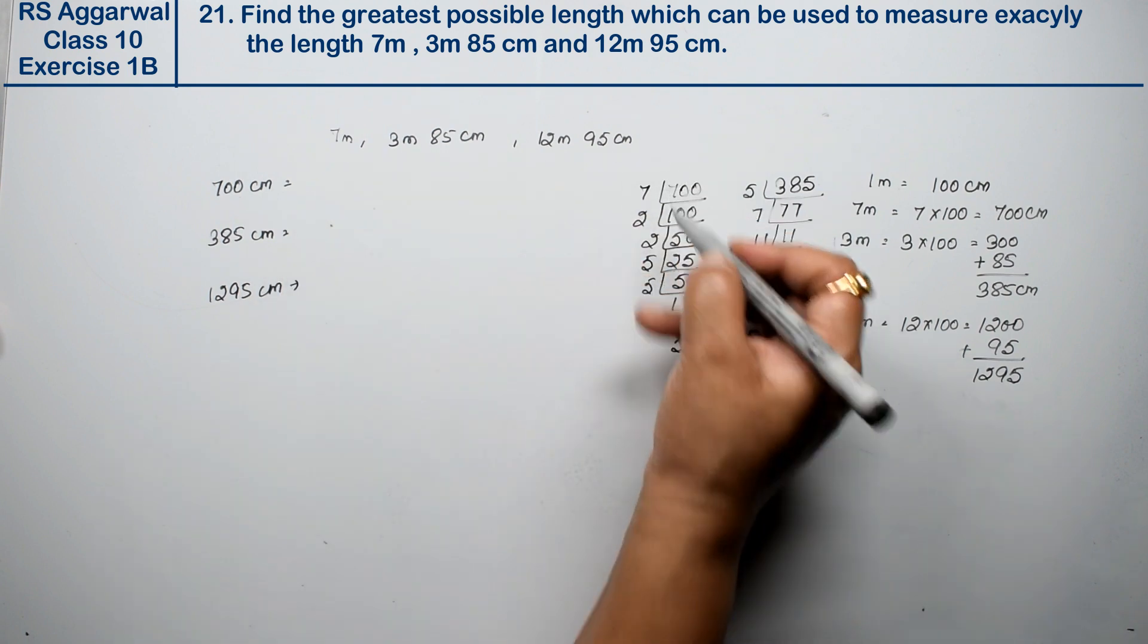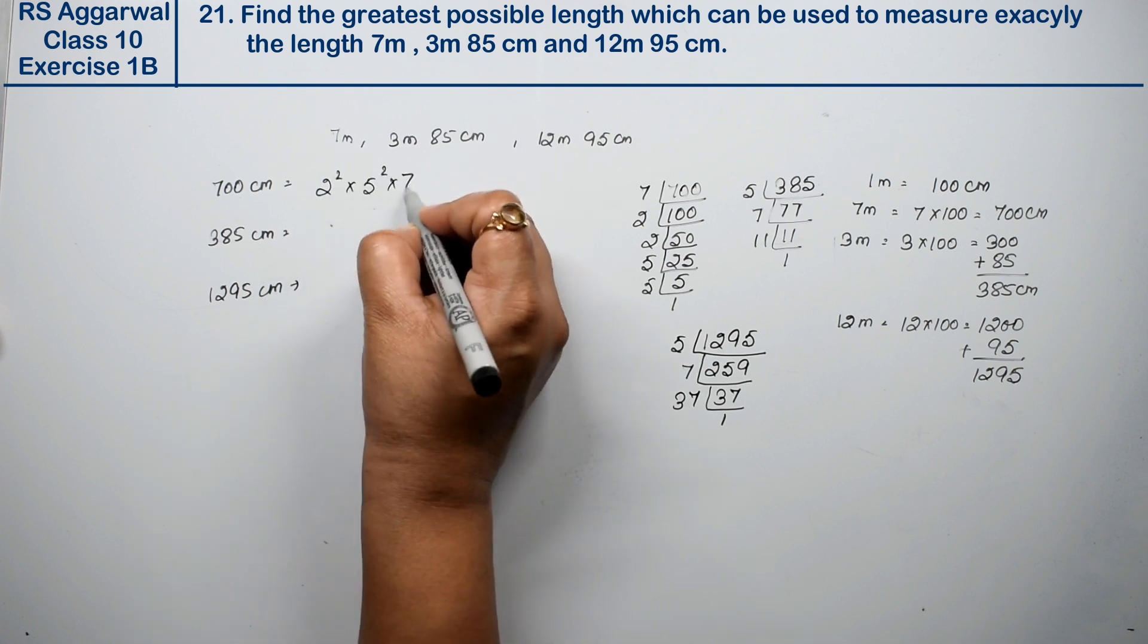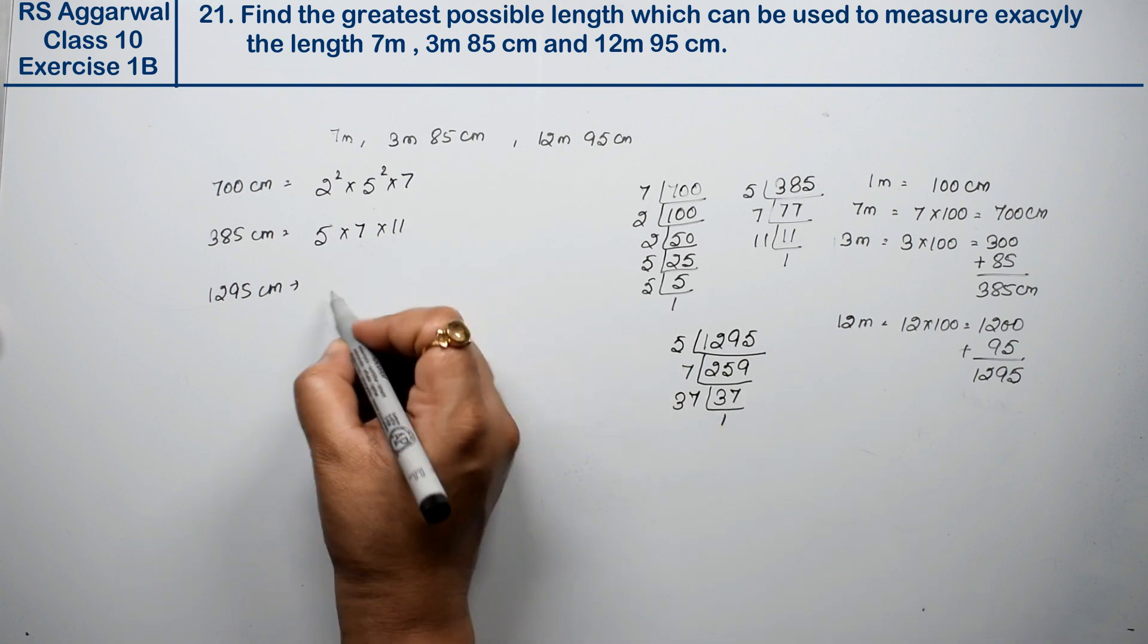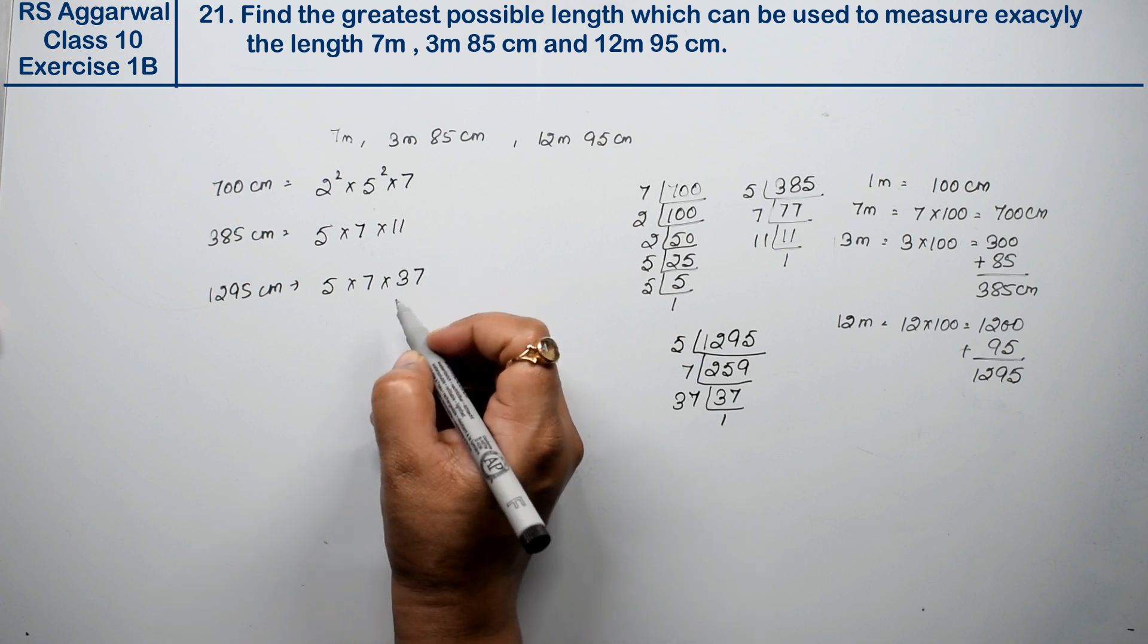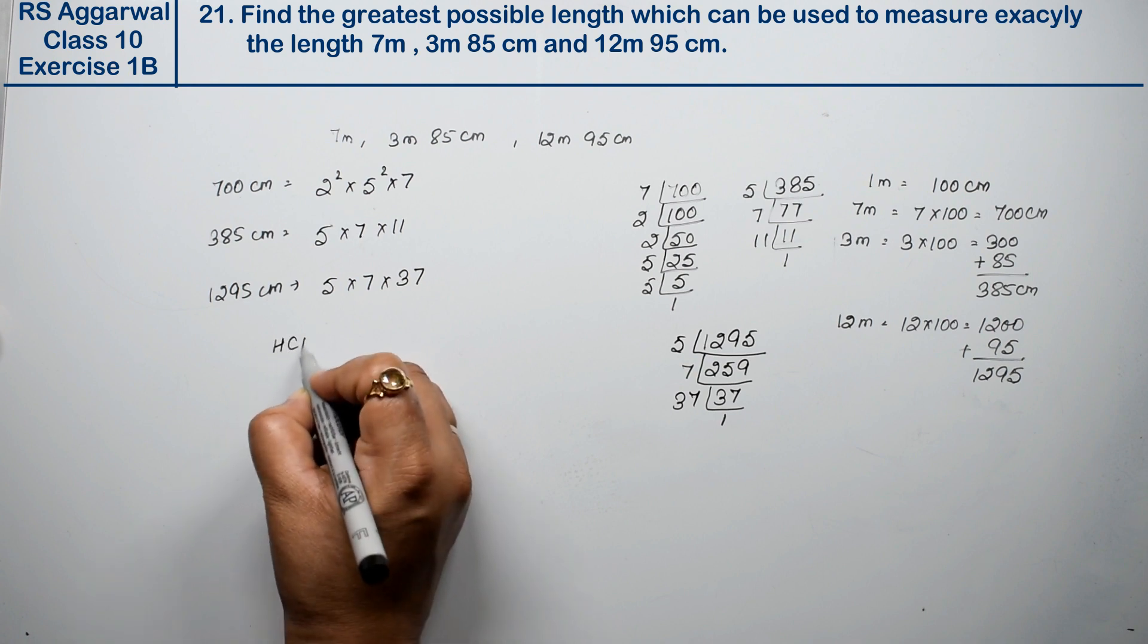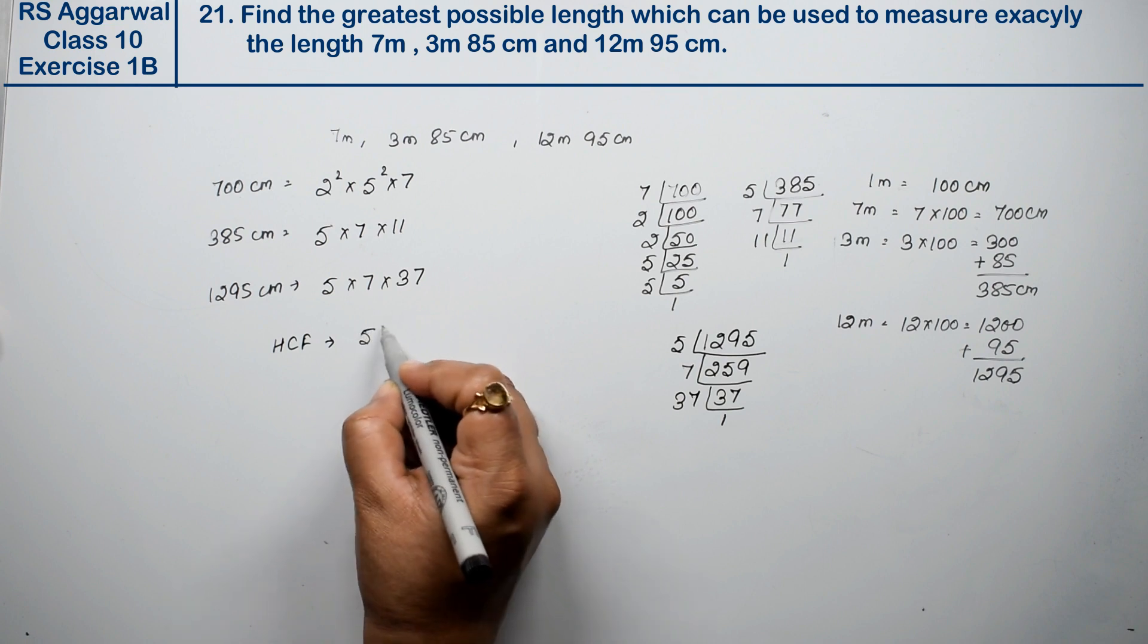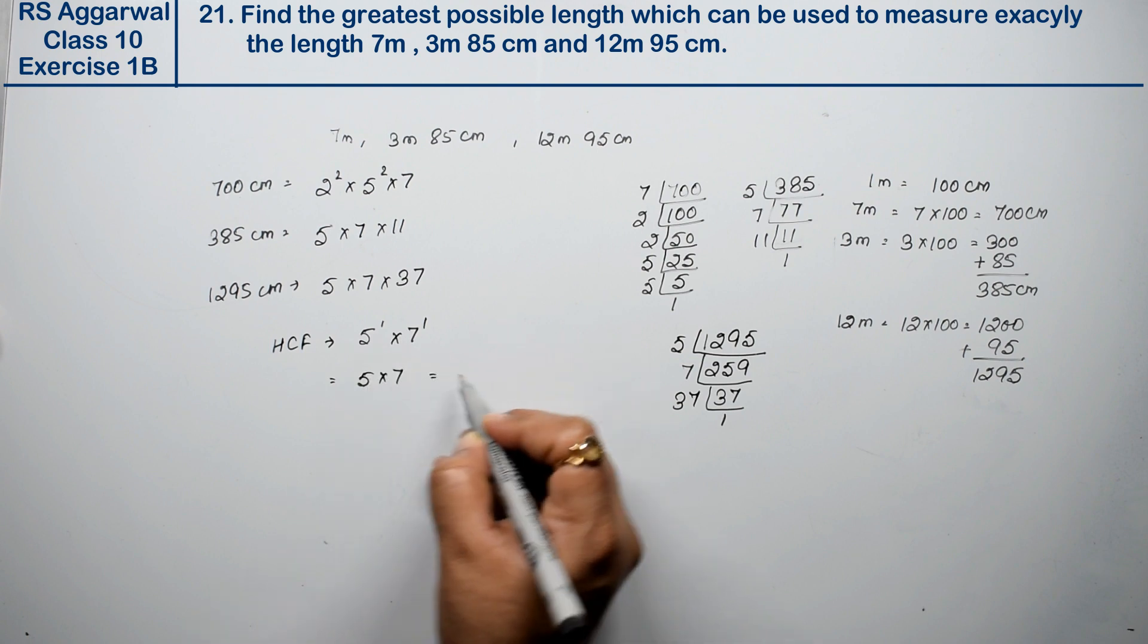Now, what are the factors? 700 is 2 squared times 5 squared times 7. 385 is 5 times 7 times 11. 1295 is 5 times 7 times 37. The highest common factor takes the common factors with least power: 5 power 1 and 7 power 1. That equals 5 times 7, which is 35.